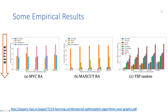Here are some empirical results. They looked at three graph optimization problems: minimum vertex cover, max cut, and traveling salesperson. Their approach (in blue) tends to perform very well compared to other approaches that don't apply learning. One nice thing about this approach is that although training time is expensive due to random sampling, at test time it is lightning fast — you're just running a single-pass greedy algorithm.